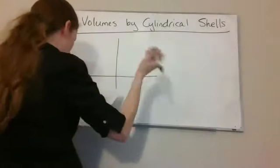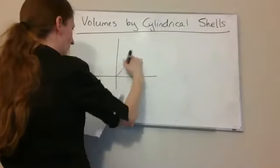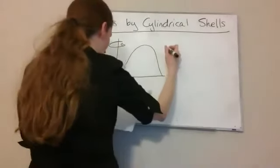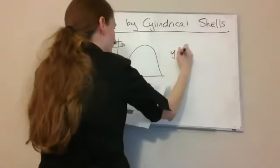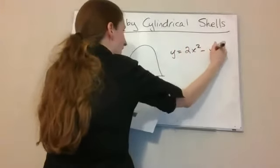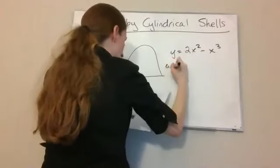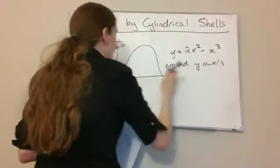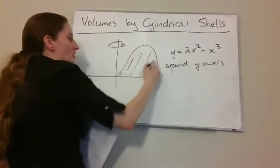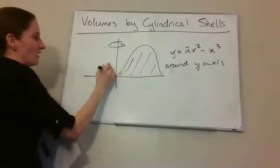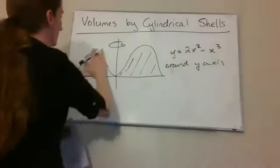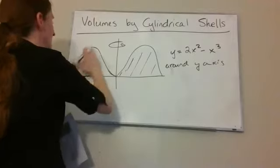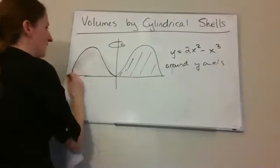Let's say that we're going to find the volume from rotating an object around the y-axis. The object is given by y equals 2x squared minus x cubed, and we're going around that y-axis. If I were going to take this solid region and rotate it around the y-axis, it's going to look similar on the other side — you have to imagine this in three dimensions.